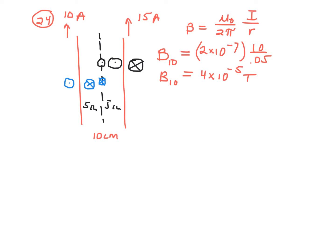If we plug into the same equation for the 15-amp wire, all we're doing is changing 10 amps to 15 amps — I'll let you figure that out. B sub 10 is towards the floor and B sub 15 is towards the ceiling. All you need to do is subtract those two: take the bigger value, which will be B sub 15 since it has a bigger current and therefore a larger field towards the ceiling, and subtract the smaller value — the 4 times 10 to the negative 5th. That gives you the net field, and the net direction will be toward the ceiling.